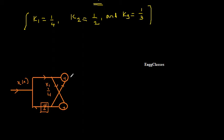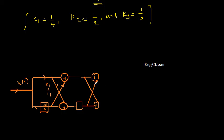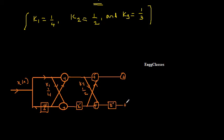Repeat the same skeleton for the second stage: draw a straight line, an adder, one delay element, another adder, join the two lines with arrows. This stage is multiplied by K2 = 1/2. Then repeat once more for the third stage: adder, delay element z^(−1), adder, joined by straight lines, multiplied by K3 = 1/3.